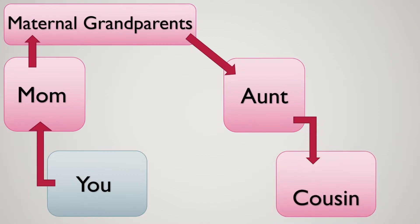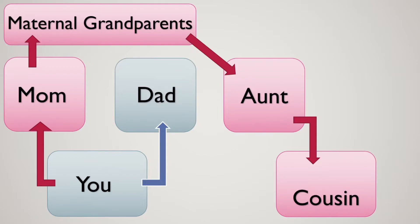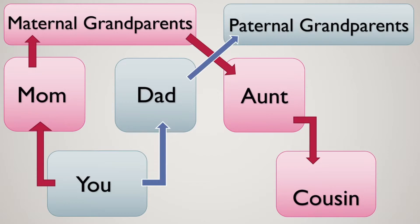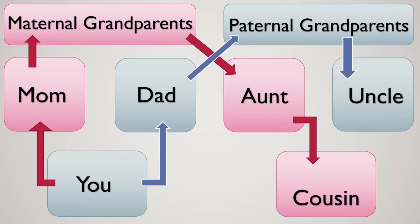Your maternal grandparents have another child who is your aunt, and your aunt is the mother of your cousin. That's not a double cousin though. So let's make the double connection. We'll follow up from you to your dad and from your father up to his parents — your paternal grandparents.